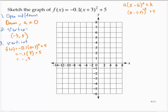Negative 0.9 plus 5 is 4.1. So that's (0, 4.1).